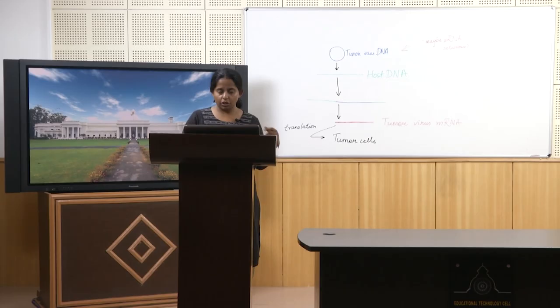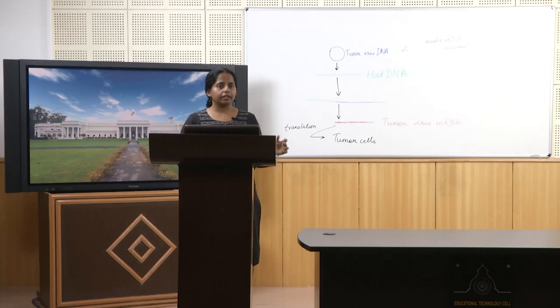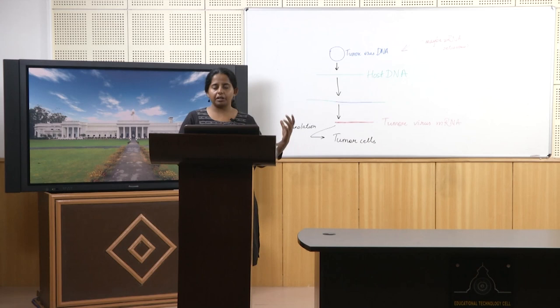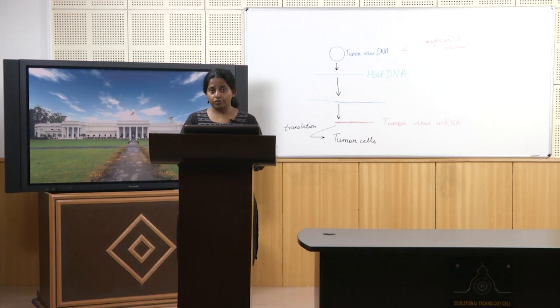The ancestors of bacteria were probably infected by a very different kind of viral DNA than the ancestors of archaea and eukarya, which is why bacterial mechanisms and metabolism are sometimes very different from archaea and eukarya. Archaea and eukarya are very close to each other in some cellular functions. Now, having cleared this about the latest theory in viral evolution, let us move on to tumor viruses.